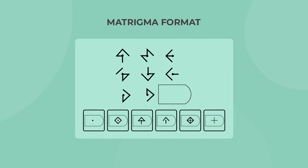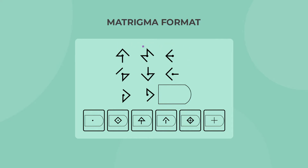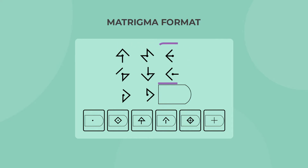All Matrigma questions have the exact same format of a 3x3 matrix. The underlying rule of that matrix can be defined by the rows, columns, or both. The top two rows and the two left columns are complete, and that is where you will find the logical rule of the matrix. You will need to apply that rule to the missing shape in the bottom row and the rightmost column.